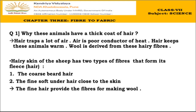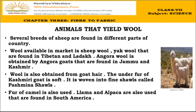The skin of a sheep has two types of fibers. First, coarse beard hairs — hairs present on the face — which are hard in nature. Second, fine soft under-hair close to the skin covering the whole body, which are soft in nature. Only the fine hair provides the fibers for making wool; beard hairs are not used.